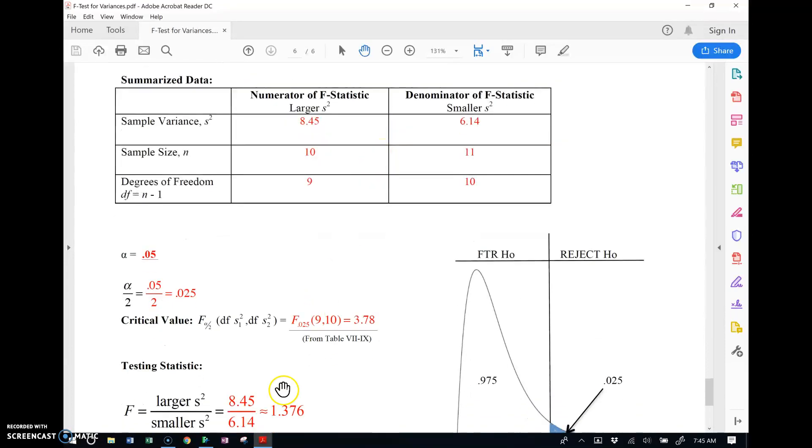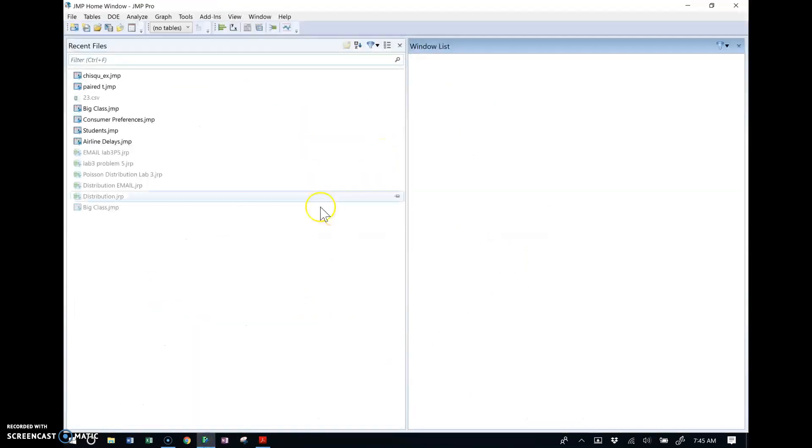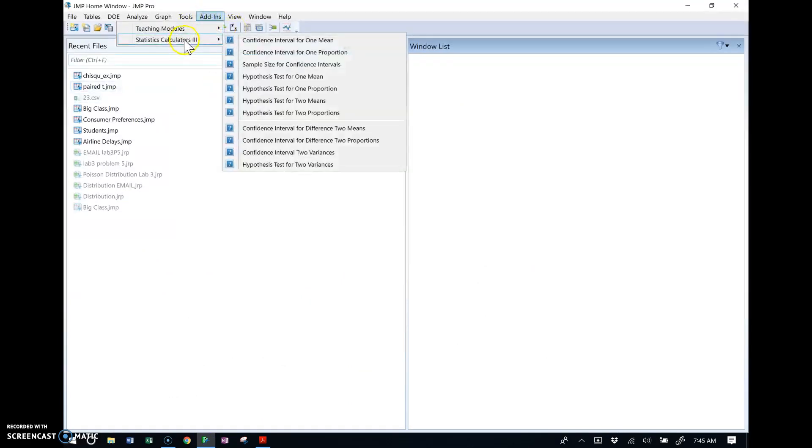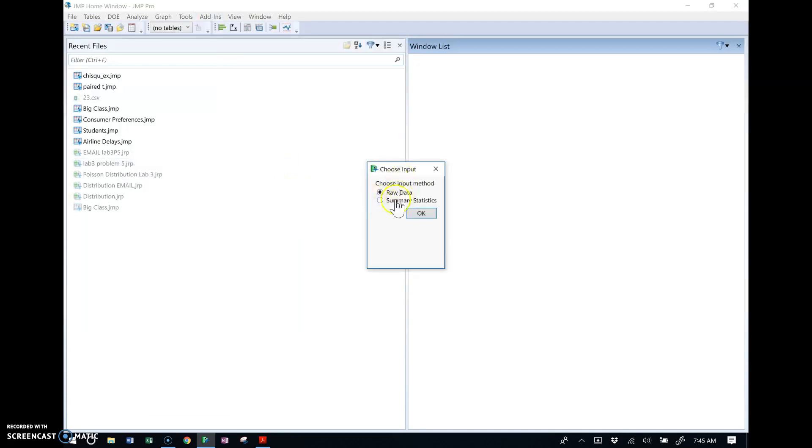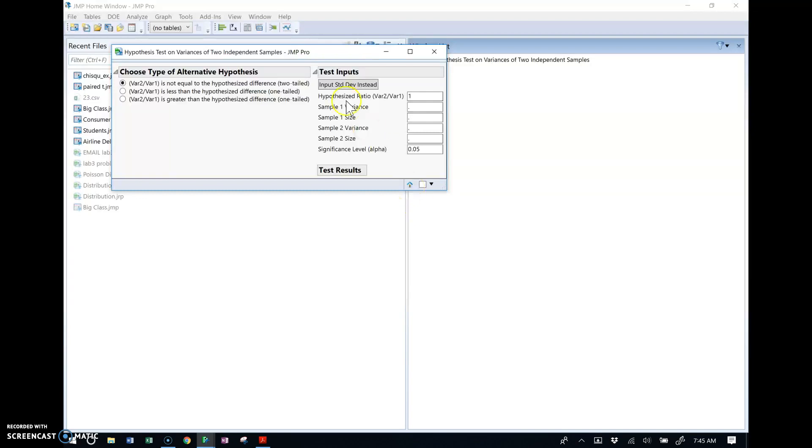Alright, now how do you do this in JUMP? Well, in JUMP this is really easy. So if I go to JUMP and go to our Add-ins menu, in the statistical calculators at the bottom there's the confidence interval and the hypothesis test for two variances. So I'm going to look at the hypothesis test. First thing it asks you, what are you giving me? Alright, we're going to give summary statistics to JUMP. So let's pop up this menu.